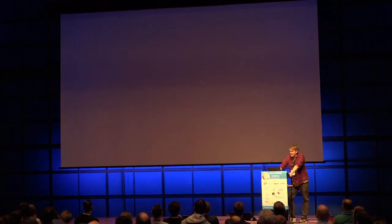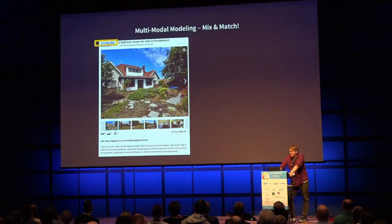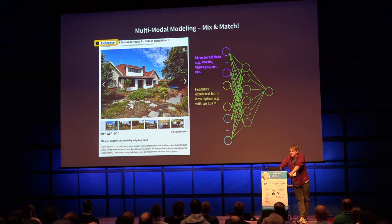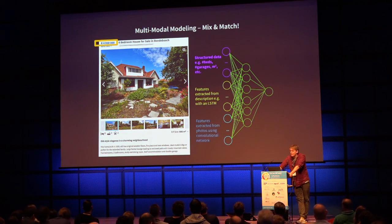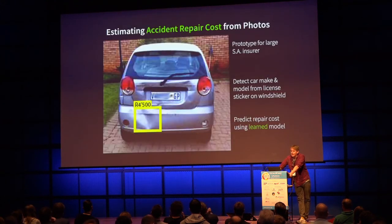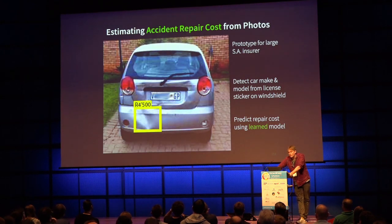I'll quickly get to some cool applications. You can do multimodal learning: structured data to predict house price, plus features from the text description, plus features extracted from a photo — using those 256 numbers as a representation of the photo content. Here are some quick case studies from what we're working on.